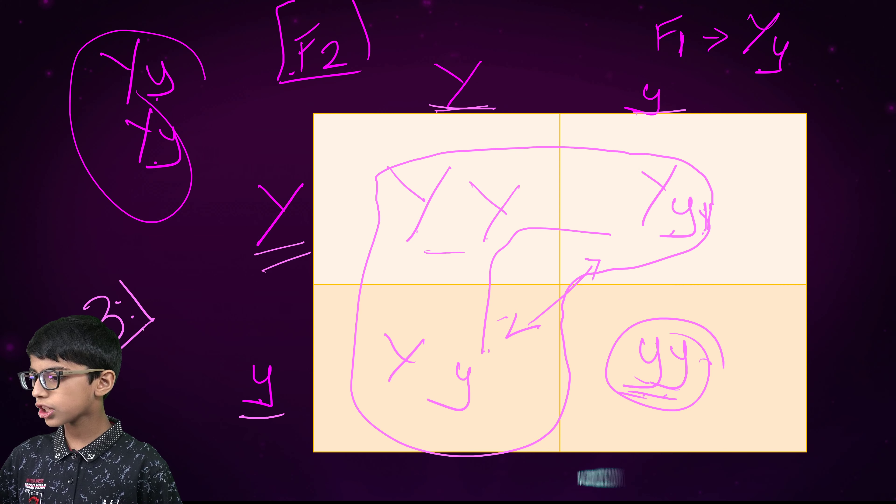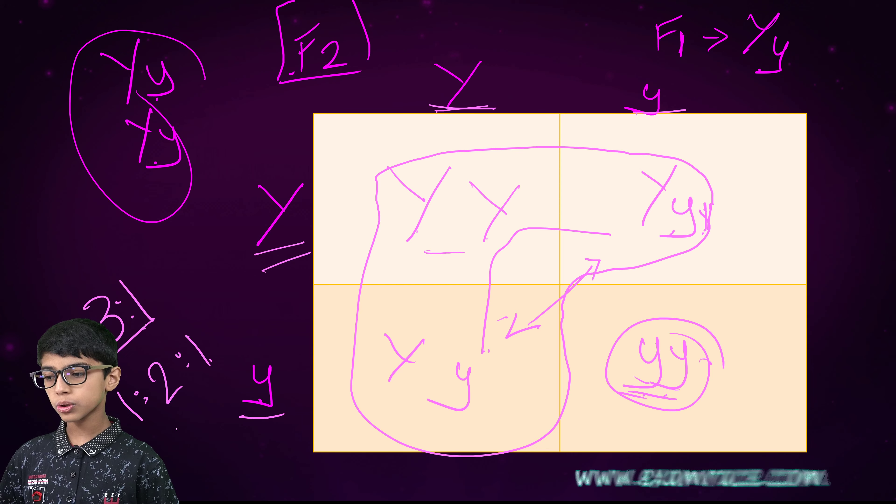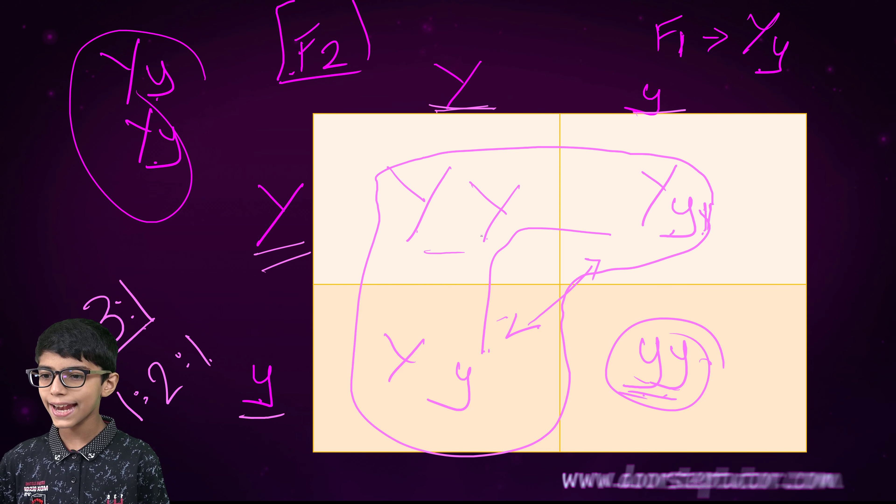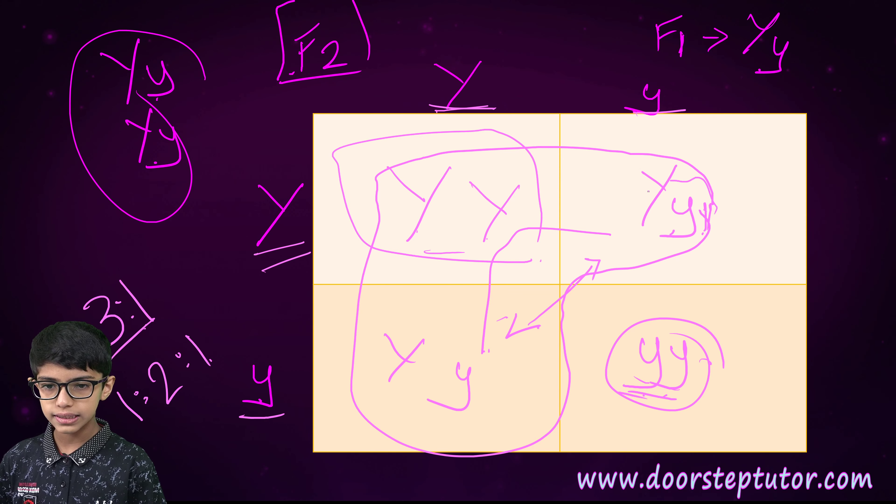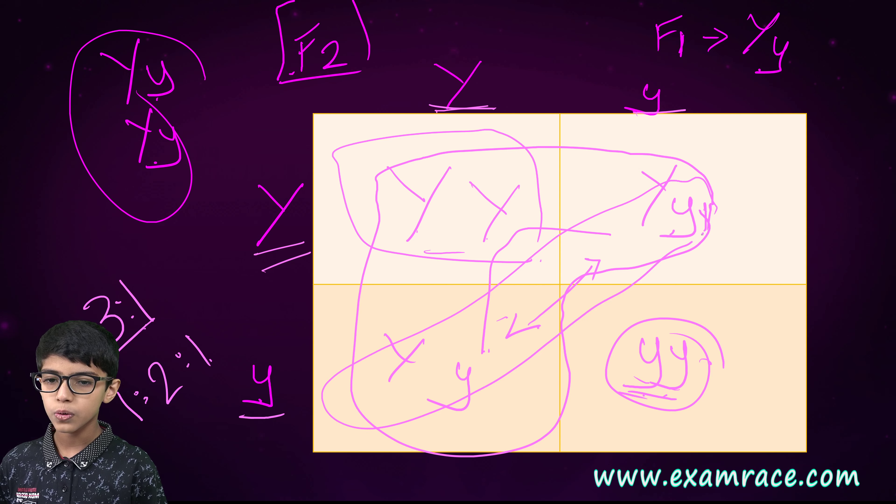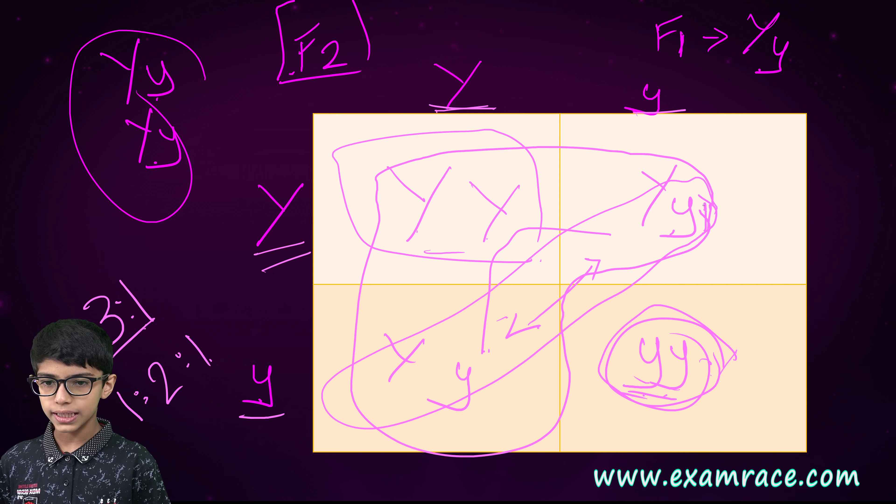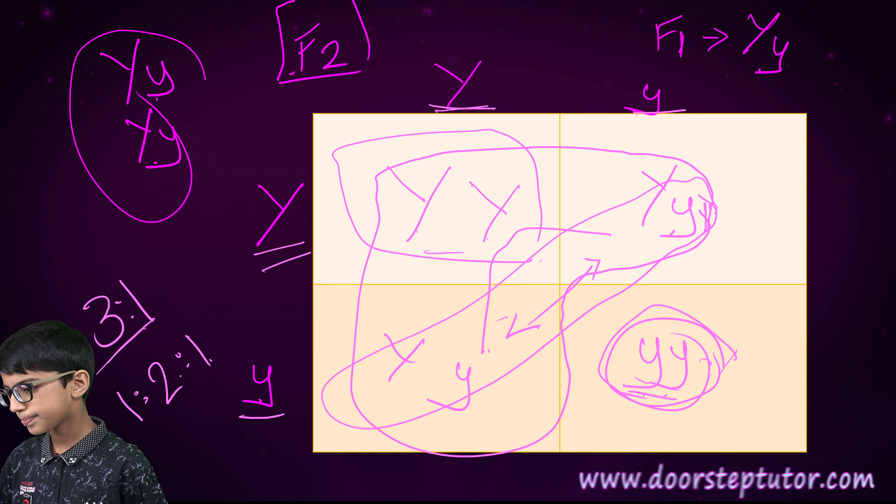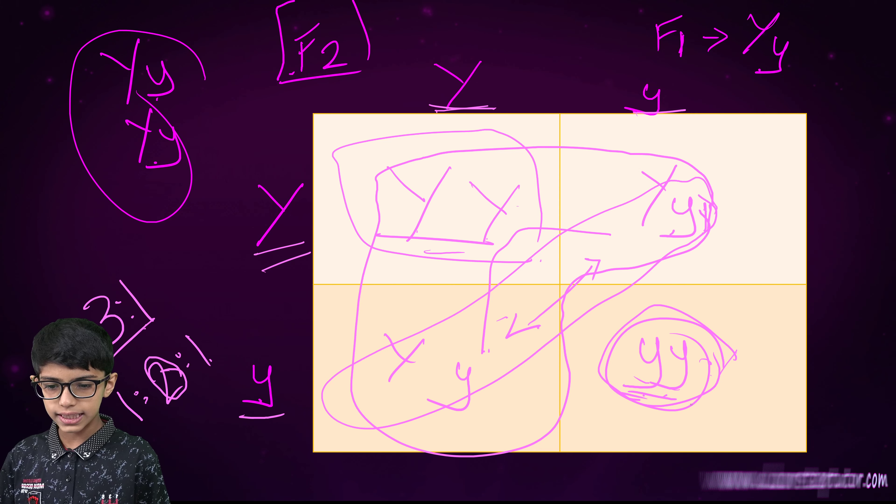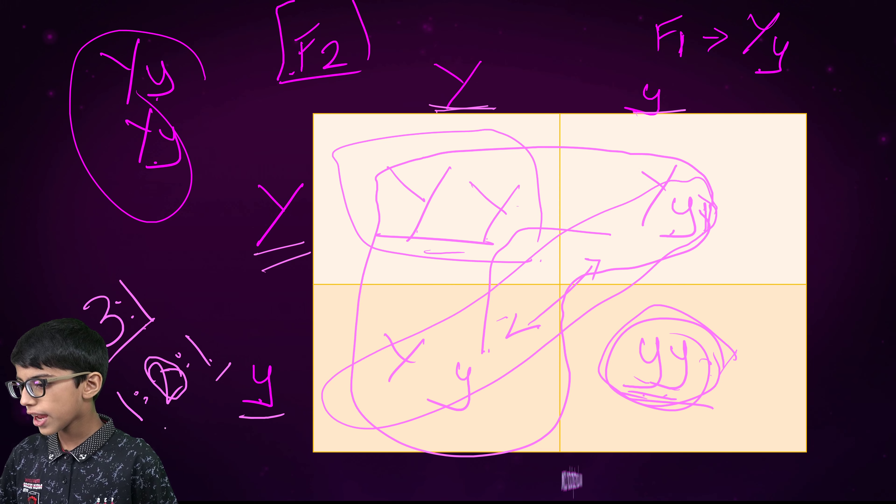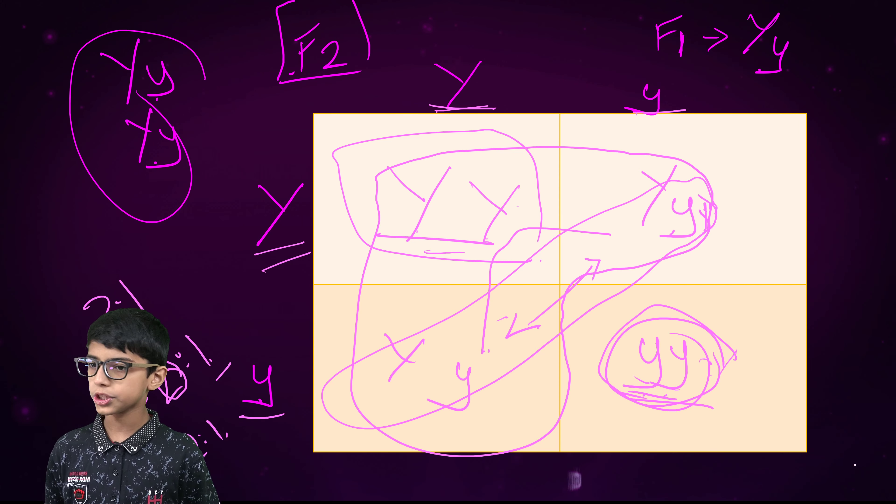Therefore, the ratio would be 3 is to 1. And the next ratio would be 1 is to 2 is to 1. How is that? Yes. This one, these are 2, and this is again 1. So, what does this mean? These two are same. This is different. And this is also different. Therefore, we get the ratio 1 is to 2 is to 1.